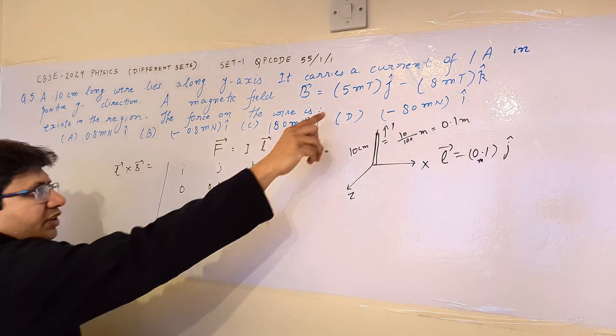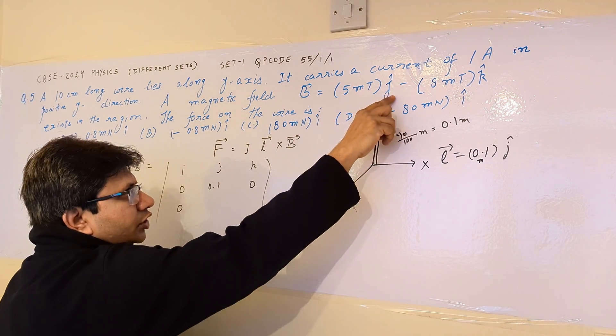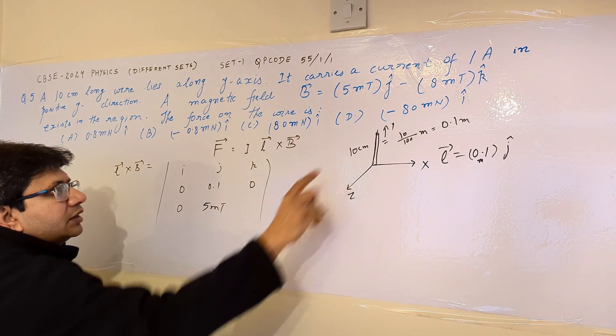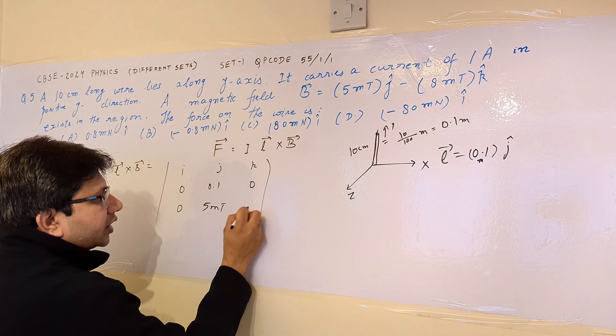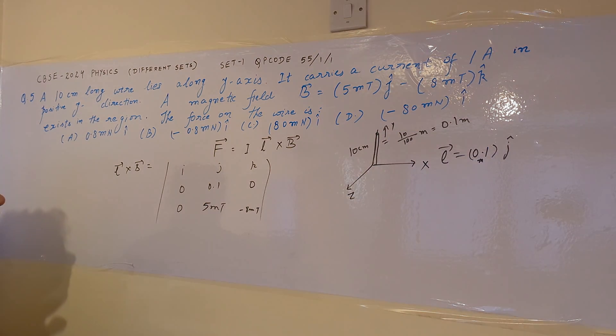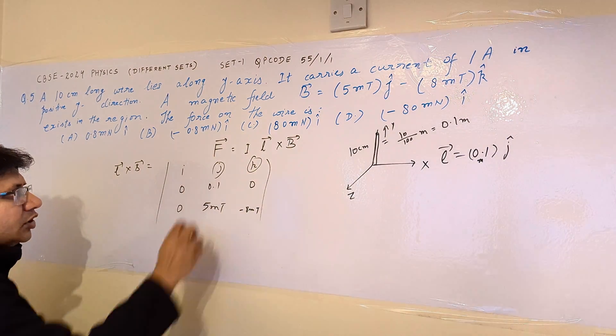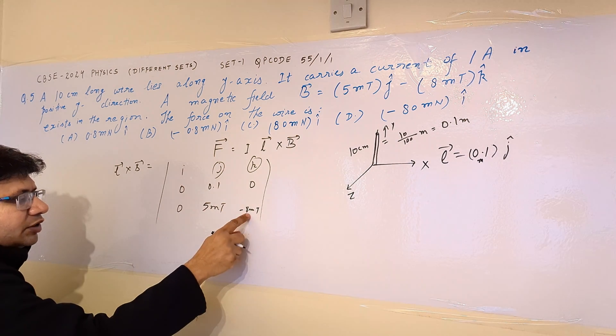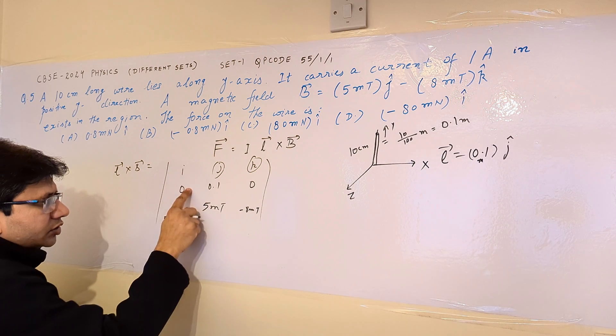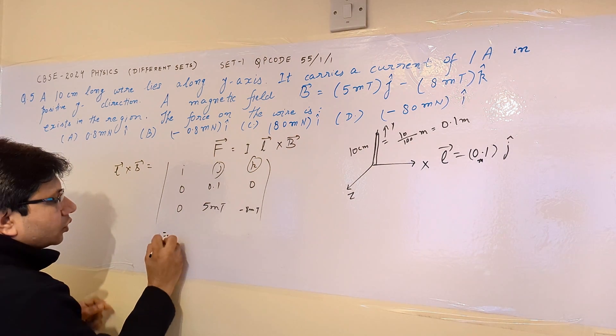Then for B, the I component is missing, so here is a 0. Then for the J component, it is 5 millitesla, and for the K component, it is minus 8 millitesla. So we can clearly see that the J component and the K component for calculating this - for J we have this multiplied by this minus this multiplied by this, so this becomes 0. For K component, this 0 multiplied by this minus this multiplied by this, so this becomes 0.